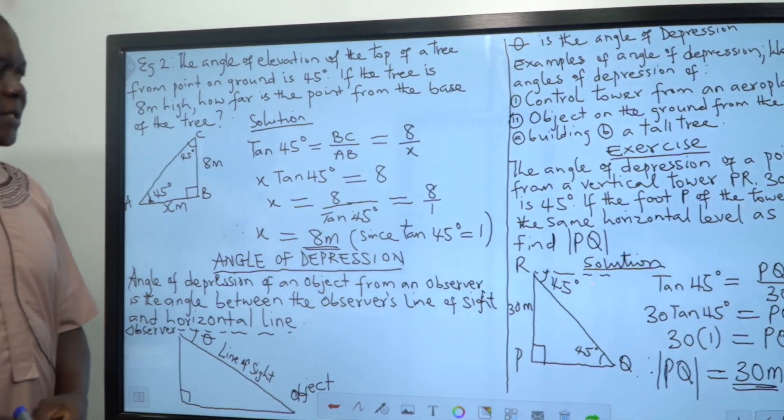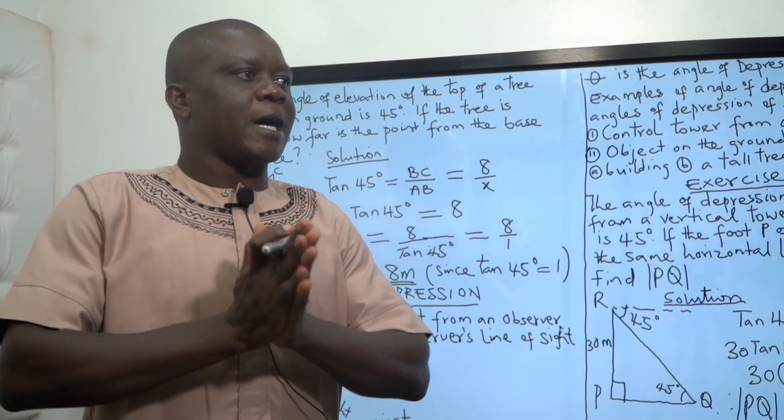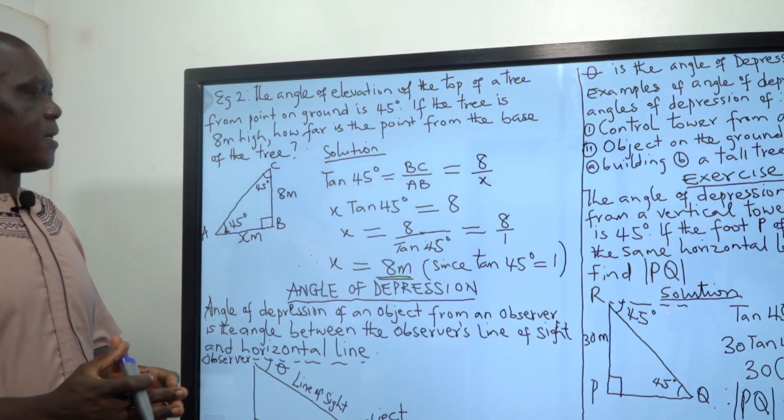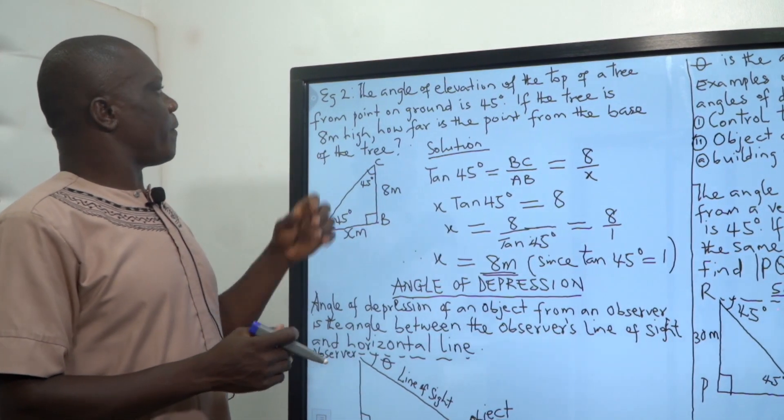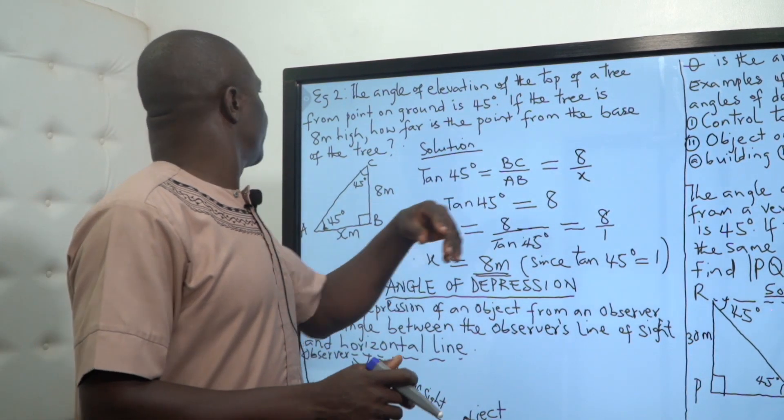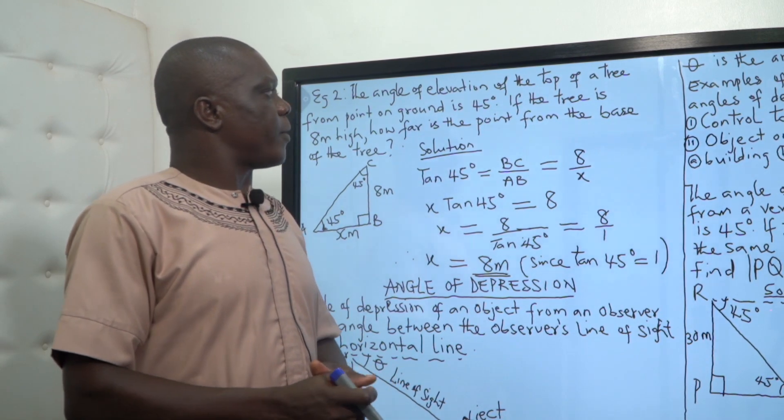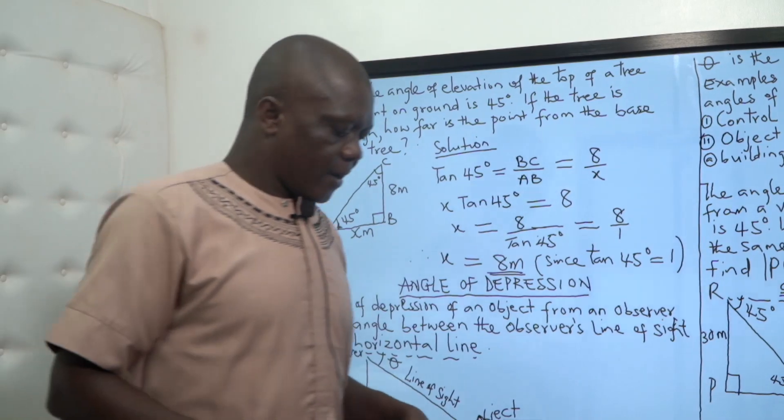We have another example because the one we just calculated is how to calculate angle. Let us now see how we can calculate the size. The angle of elevation of the top of a tree from a point on the ground is 45 degrees. If the tree is 8 meters high, how far is the point from the base?